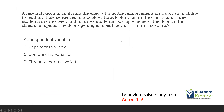Question one. A research team is analyzing the effect of a tangible reinforcement on a student's ability to read multiple sentences in a book without looking up in the classroom. Three students are involved, and all three students look up whenever the door to the classroom opens. The door opening is most likely a what in this scenario? When we're thinking about variables in an experimental scenario, consider the independent variable, dependent variable, extraneous variables, and confounding variables.